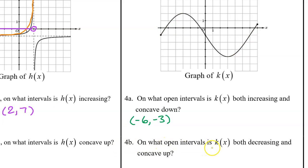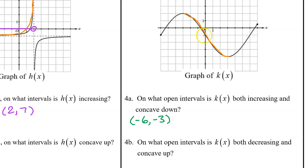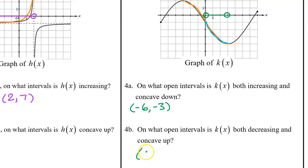4b. On what open intervals is k of x both decreasing and concave up? k of x is decreasing for a portion of the graph, but we also need it to be concave up. k of x is concave up in part of the graph, with the point of inflection appearing to be at the y-axis. So the part that is both decreasing and concave up is from the point of inflection to the end of the decreasing section. Input values only: this is the interval from zero to three.